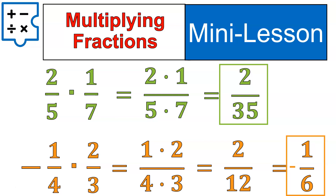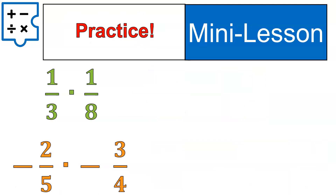If that was really super complicated and you weren't able to follow along, please watch a video on multiplying fractions, multiplying positive and negative fractions, or simplifying fractions — I have videos for all of those. If this is blowing your mind already, you may need to go back to a prerequisite lesson. Now, time to practice: multiply one-third times one-eighth, and also negative two-fifths times negative three-quarters. Go ahead and do that — pause the video.